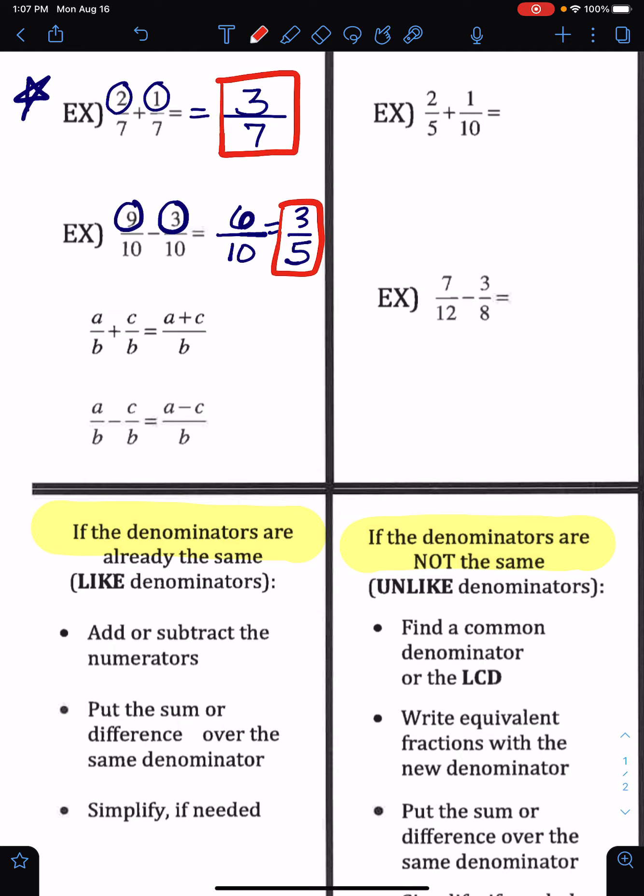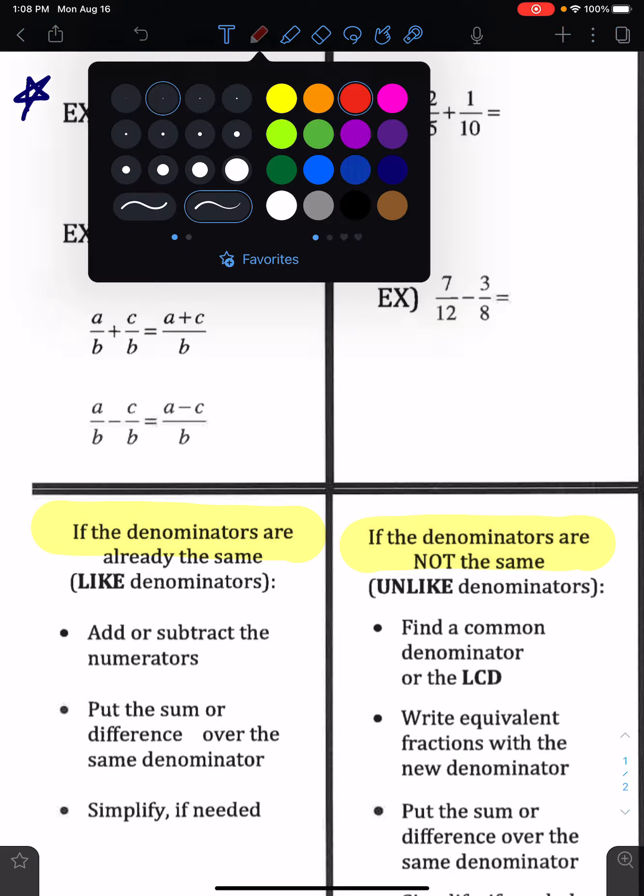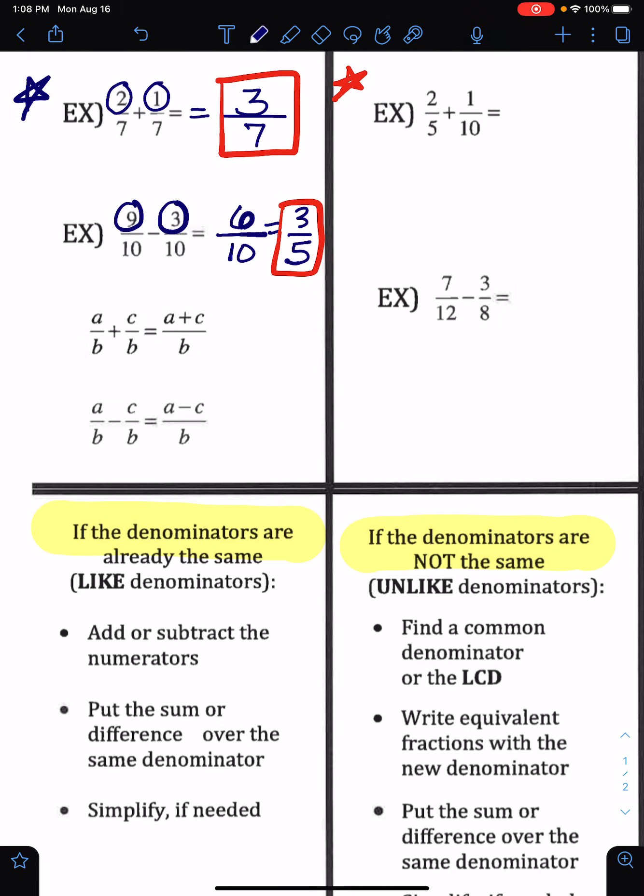All right, so that's what we do when we have like denominators. In this next column over here, we have two examples with unlike denominators, so that means the number on the bottom is not the same in each of the fractions. Our first step is going to be to find a common denominator.